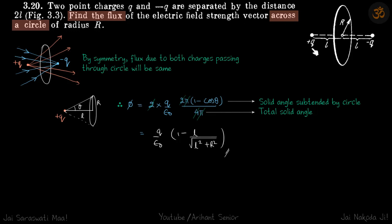We are given two charges, plus Q and minus Q, and in between we have a circular region. We need to find the flux across this circle.